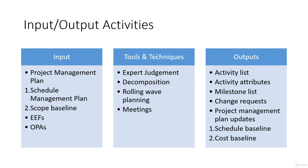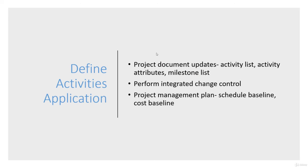Outputs include the activity list, activity attributes, milestone list, change requests, and project management plan updates including schedule baseline and cost baseline. The application updates project documents — activity list, activity attributes, milestone list, and the change control process, as well as the project management plan like schedule baseline and cost baseline. While developing our schedule and timeline, we also look at cost estimates and the efforts needed to implement changes, which helps with cost baselining. That's it for now — we have a few more activities within this knowledge area and we'll address them in the next few videos.